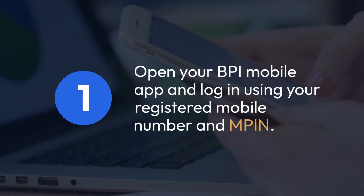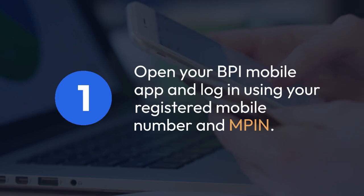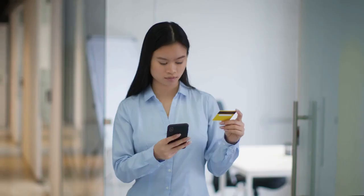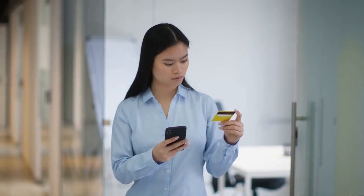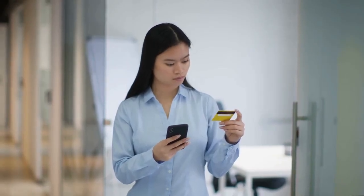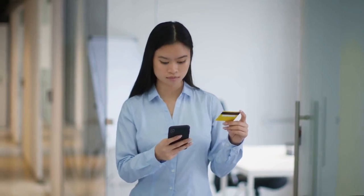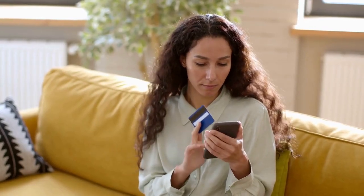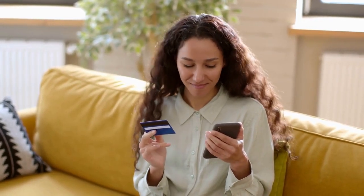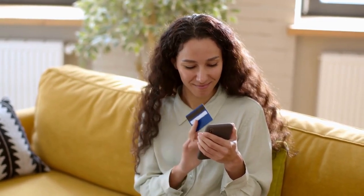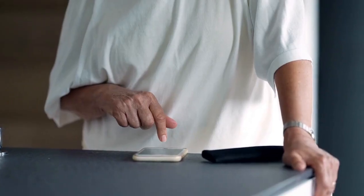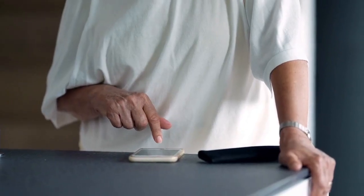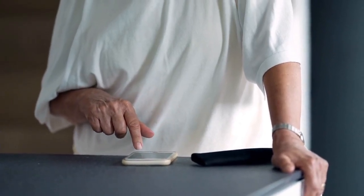Here's how to do it. Step 1: Open your BPI mobile app and log in using your registered mobile number and MPIN. Step 2: Once you're logged in, navigate to the section where you see your account transactions. This is usually found under a tab like Accounts, Transactions, or something similar. The exact location might vary slightly depending on your app version.